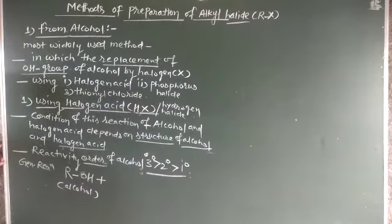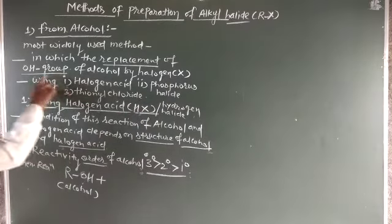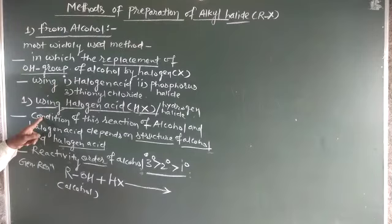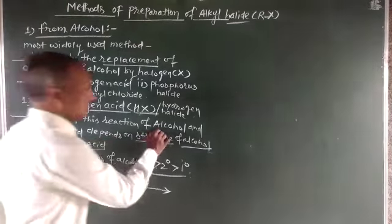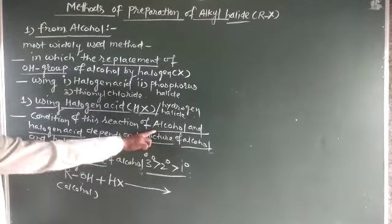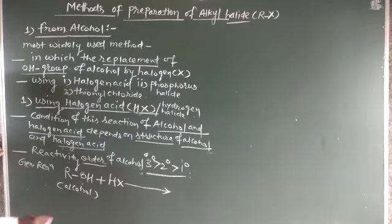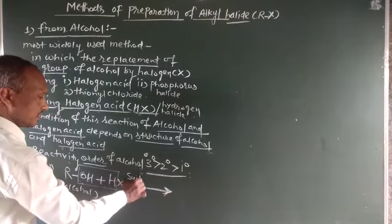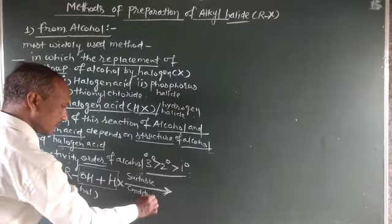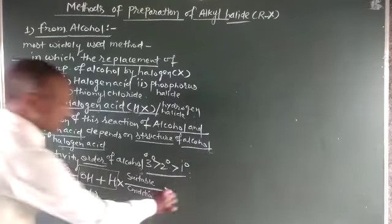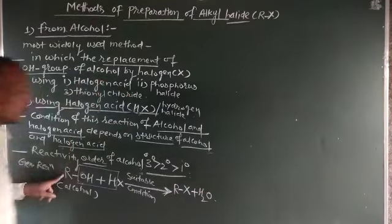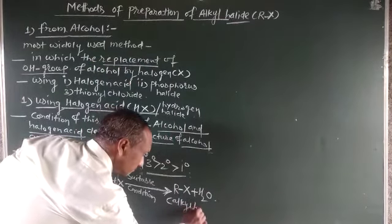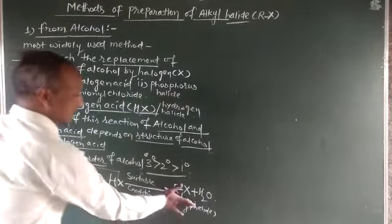The OH group of alcohol on treatment with halogen acid HX, under suitable conditions, forms R-X plus the byproduct H2O. R-X is the alkyl halide. So from alcohol and halogen acid, we get alkyl halide and water as a byproduct.